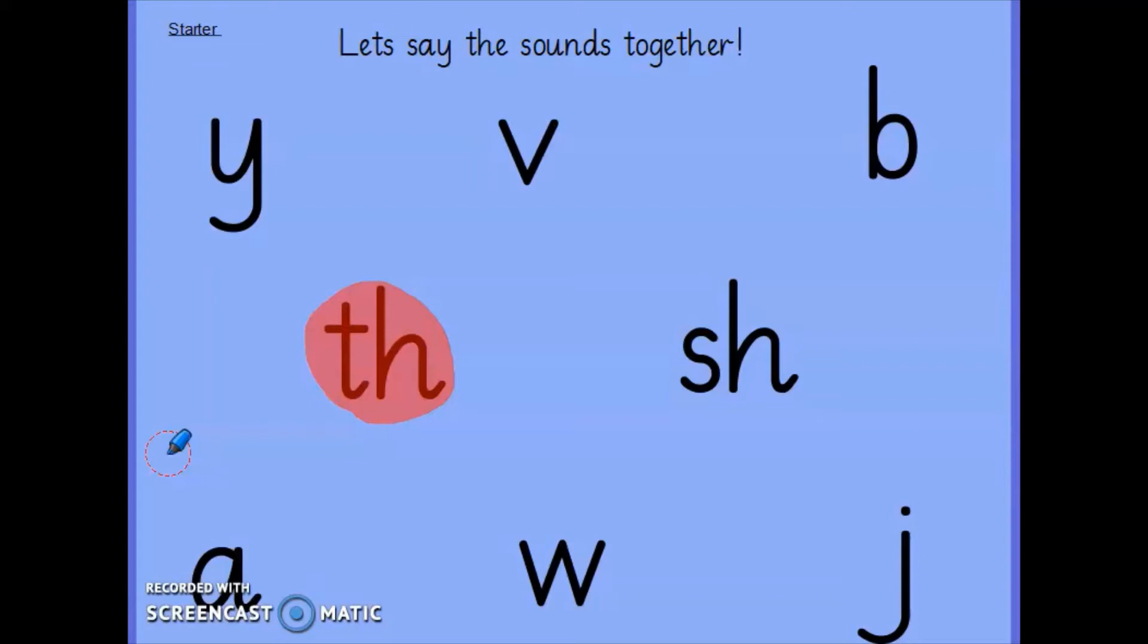Well done. Can you think of something that begins with the th sound? You could think of thing or thumb. Well done. Let's look at another one. What sound is that? Sh. Well done. What word can you think of with the sh sound? You could have shop or shoe. Well done. This one. Y. What word could you think of? You could have yo-yo or yoghurt.